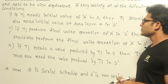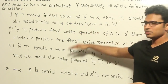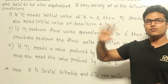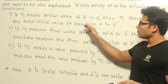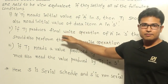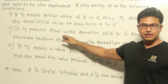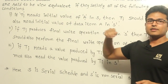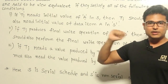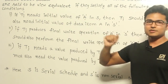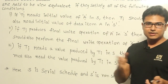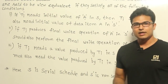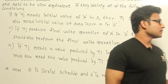Now if two schedules follow these three rules, then we can say that both are view equivalent. And if one of the schedules happens to be non-serial and the other happens to be serial, then we can say that the non-serial schedule is view serializable because there is at least one serial schedule to which it is equivalent.